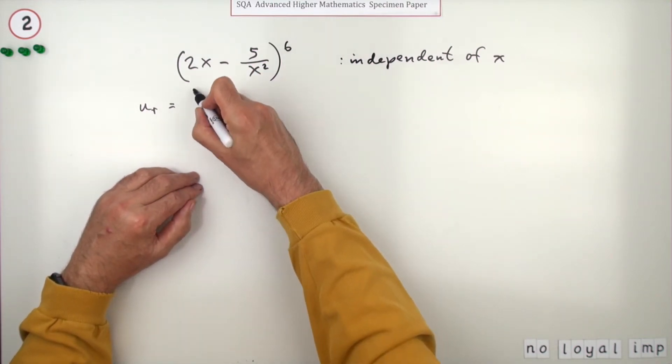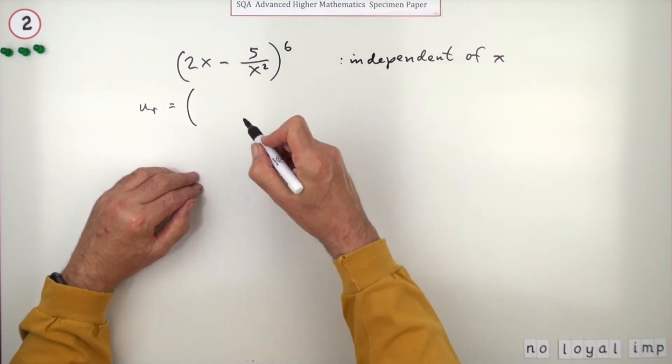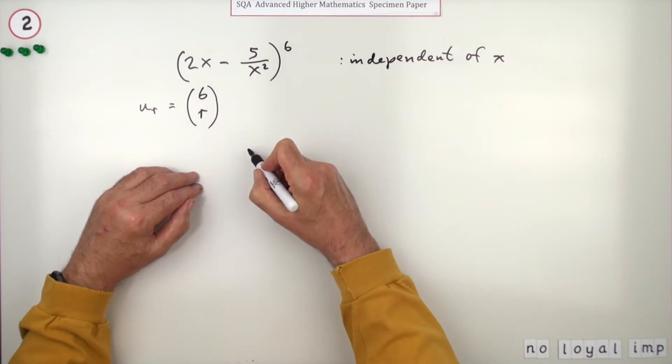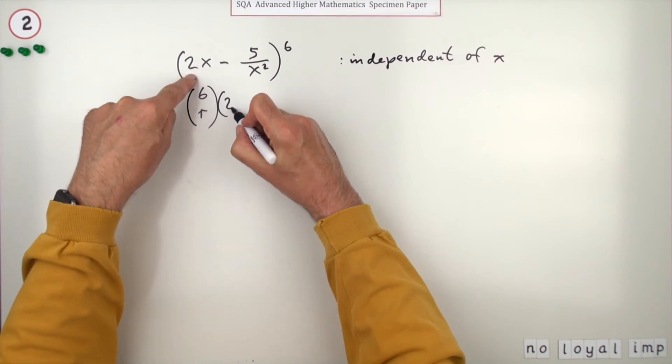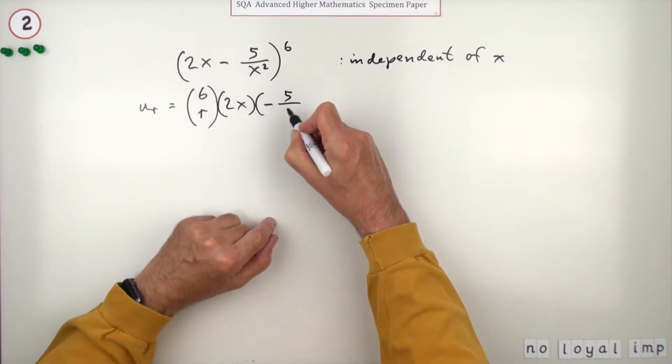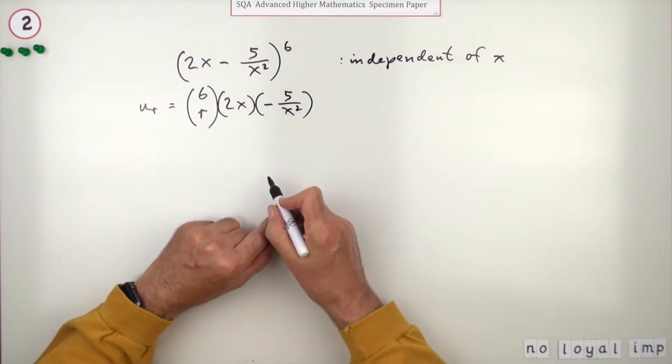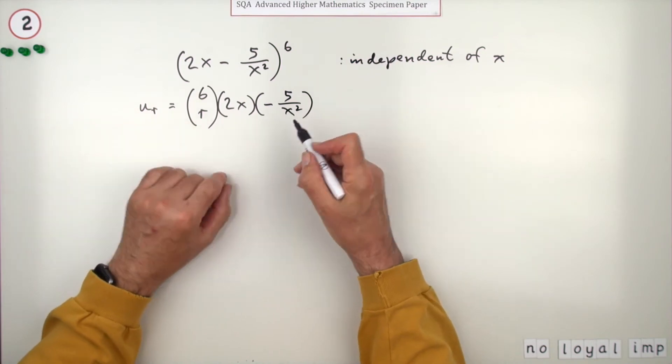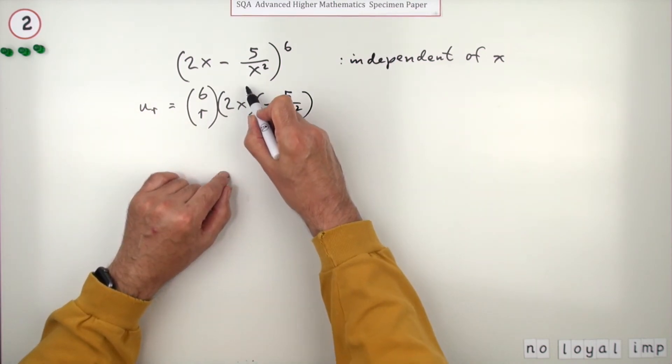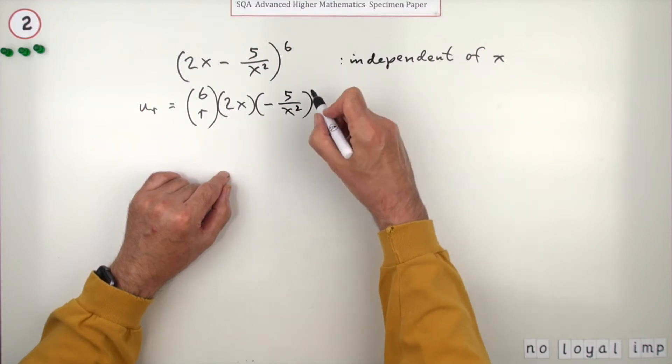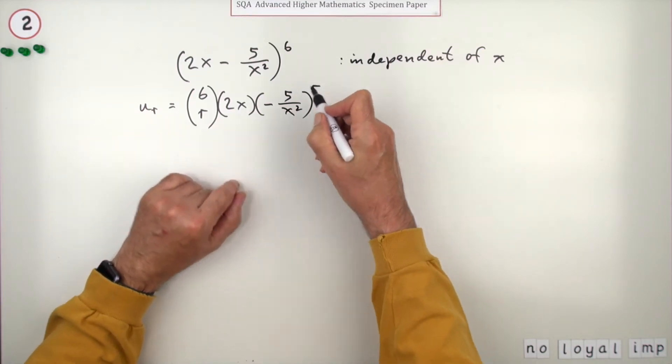So what's the general term? Maybe let's put u_r for the general term, because the general term in a binomial is made up of three parts. There's the binomial coefficient, which in this case is 6Cr. Then there's the first part of the binomial, and then there's the second part. And normally it doesn't matter which way around you do, but normally you take this to be the one that starts at six and works its way down, and this is one that starts at zero and works its way up.